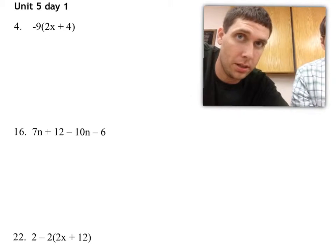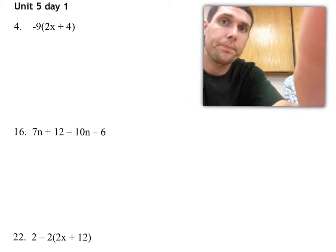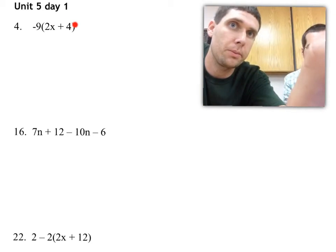Number 4 on the notes today, we discussed the distributive property. That's where we have a number, like negative 9 here, sitting out in front of parentheses with a couple things inside the parentheses.